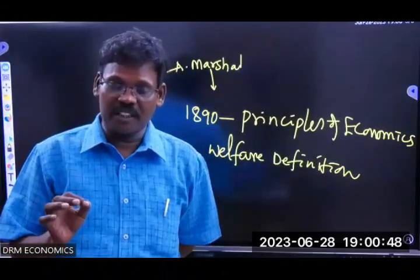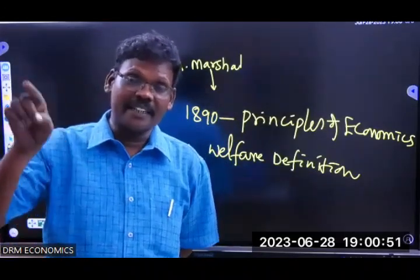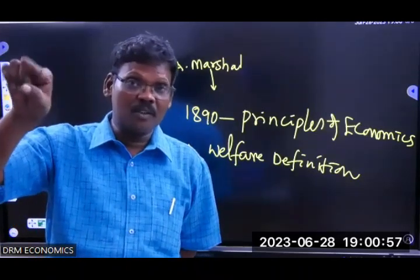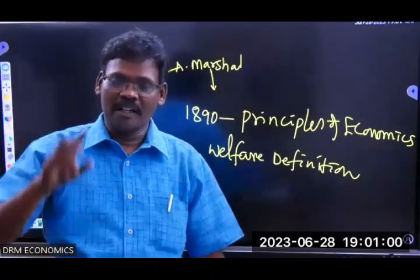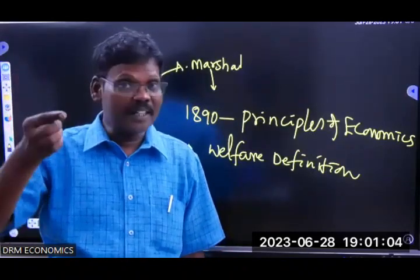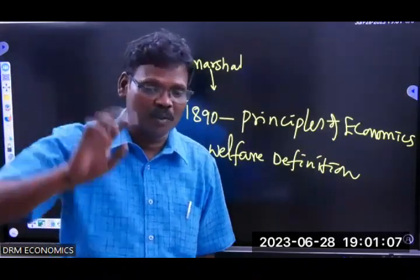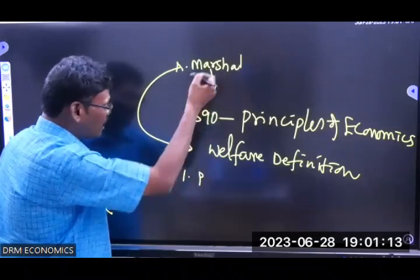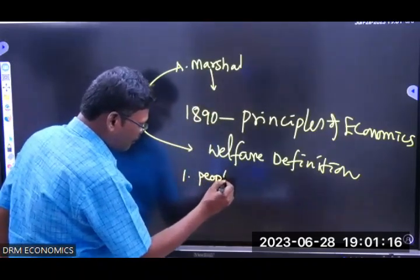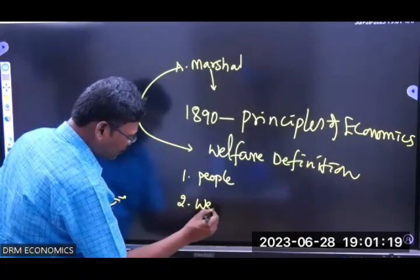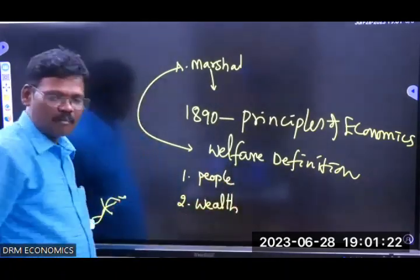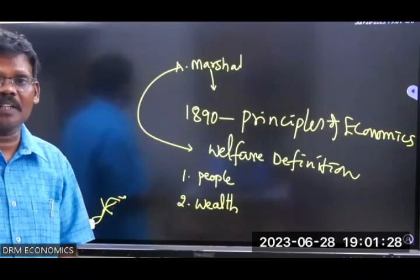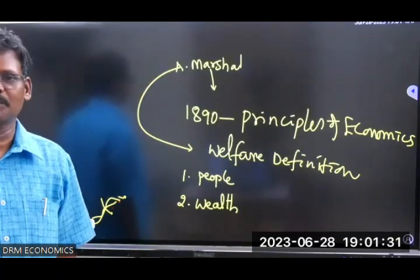According to the welfare definition, countries are creating wealth for the welfare of the people. So according to Marshall's definition, the first priority was given to people, and the second priority was given to wealth — which is essentially the reverse of the wealth definition.